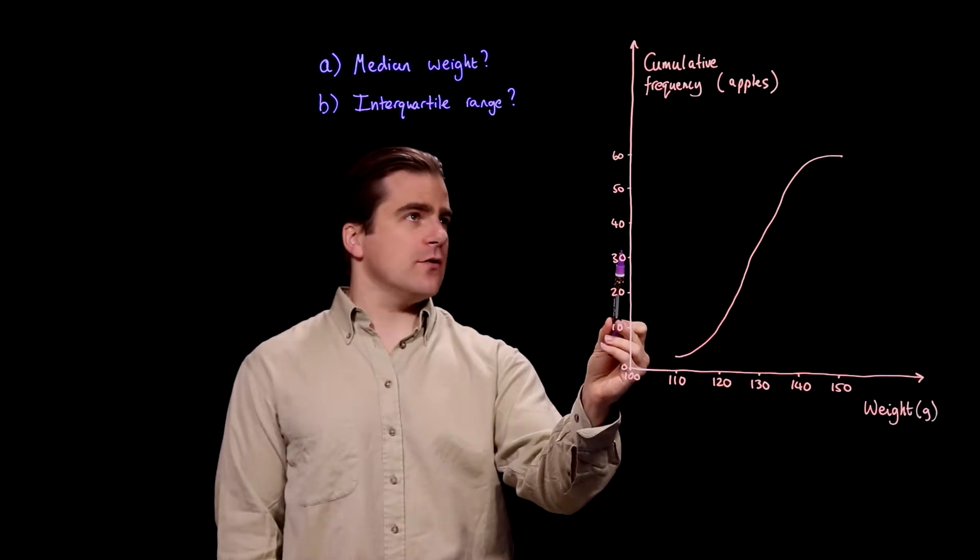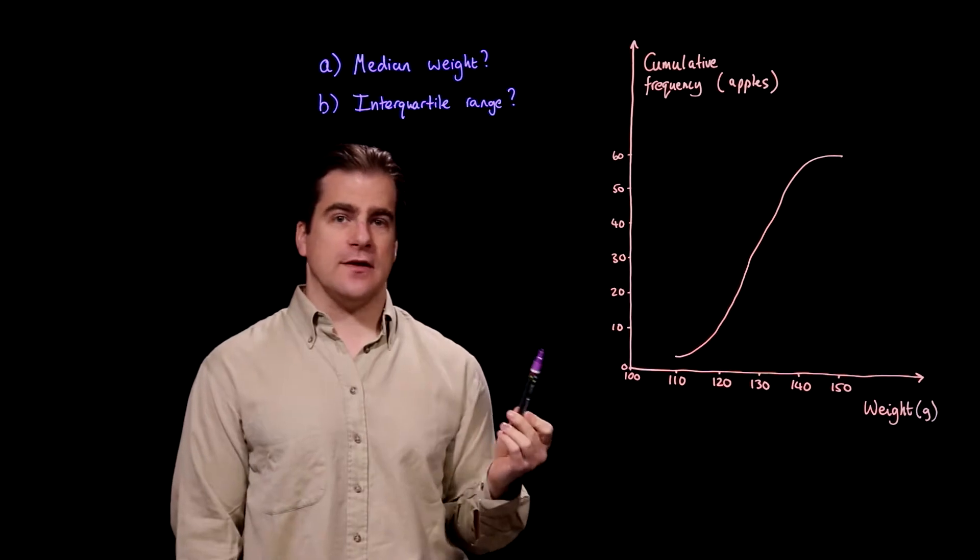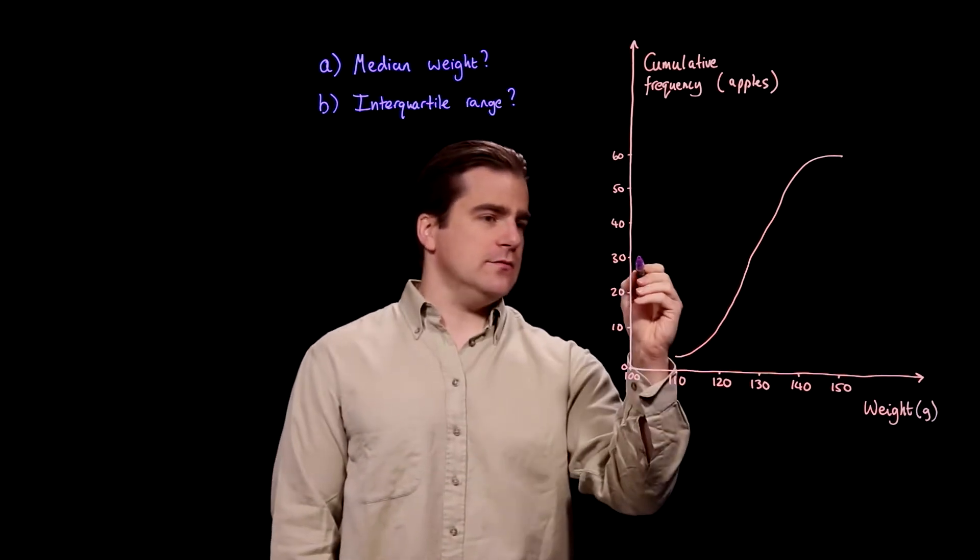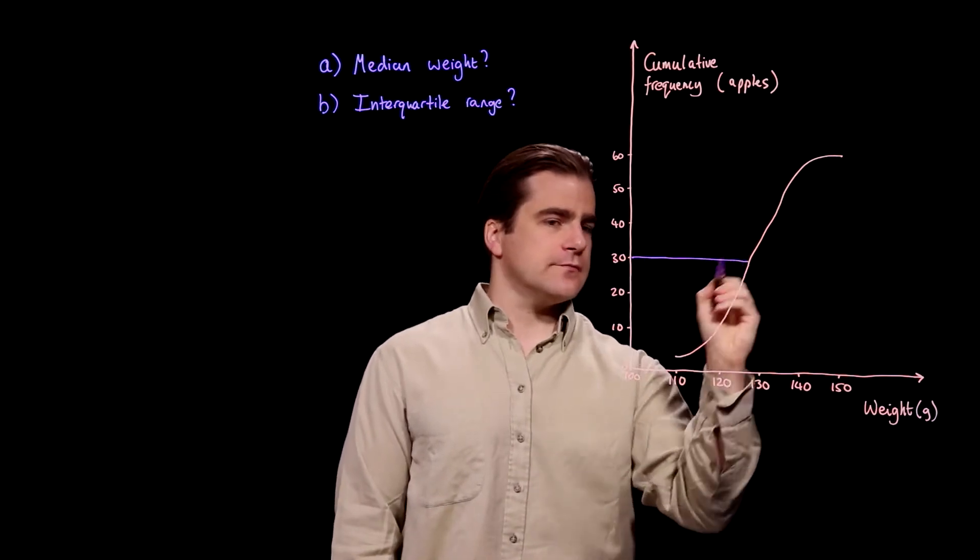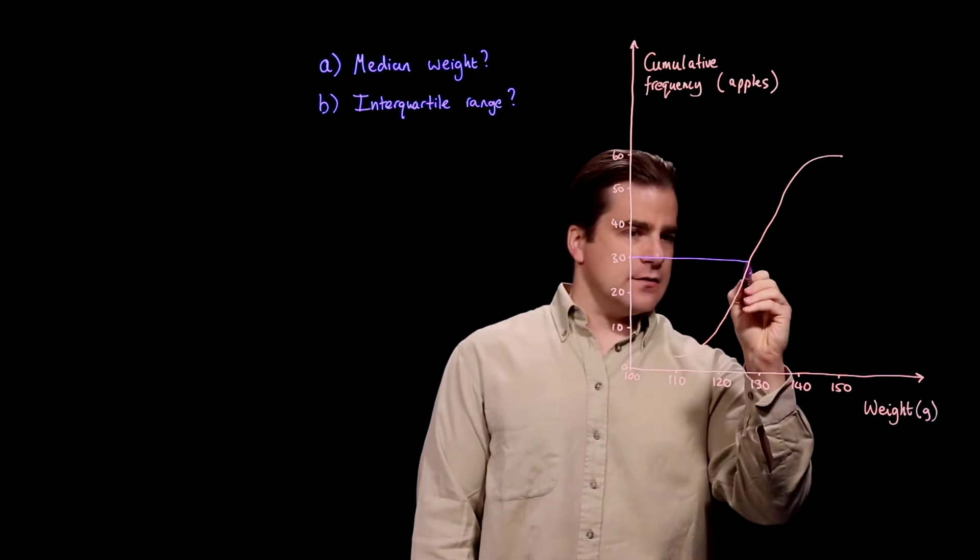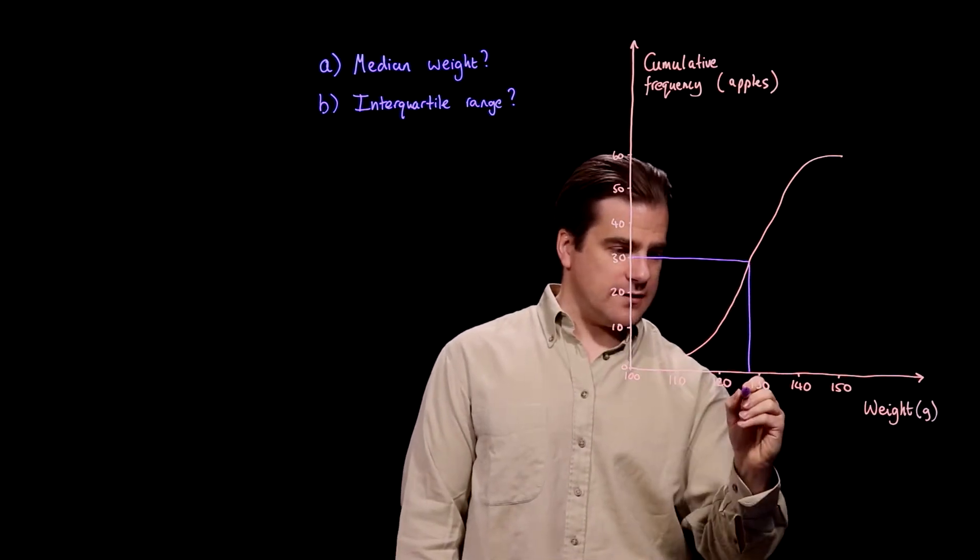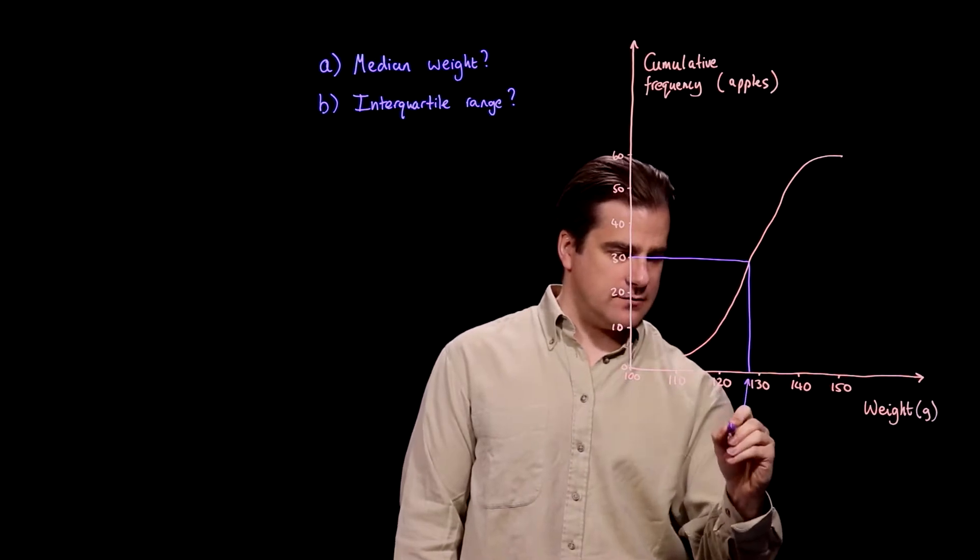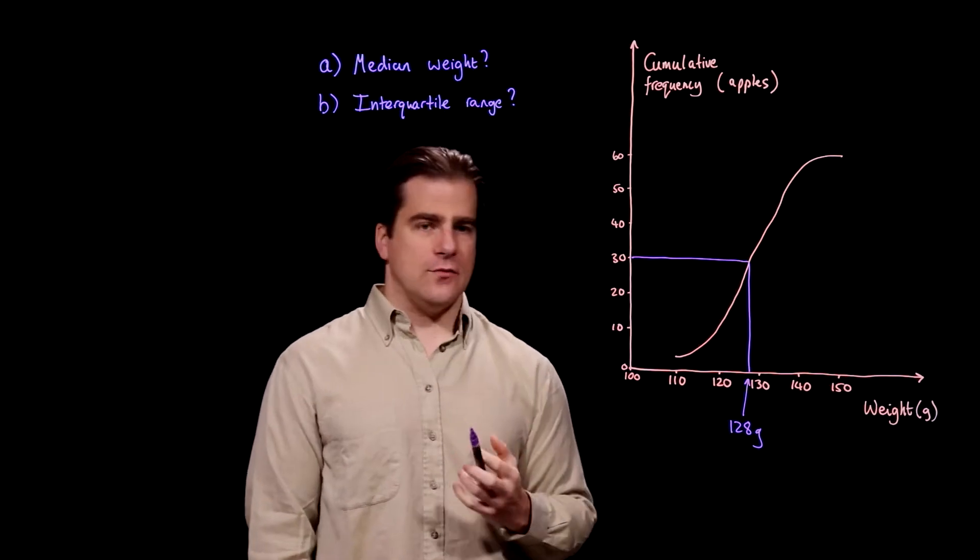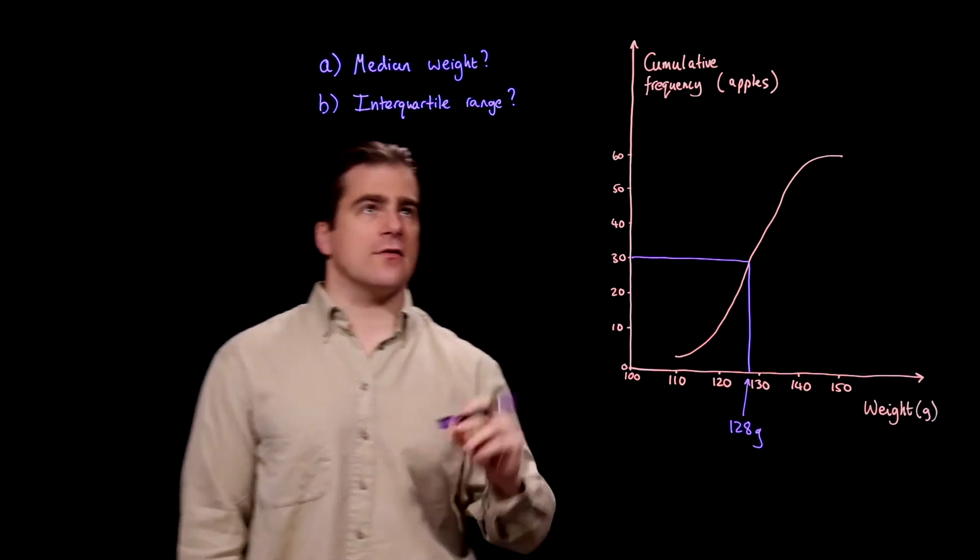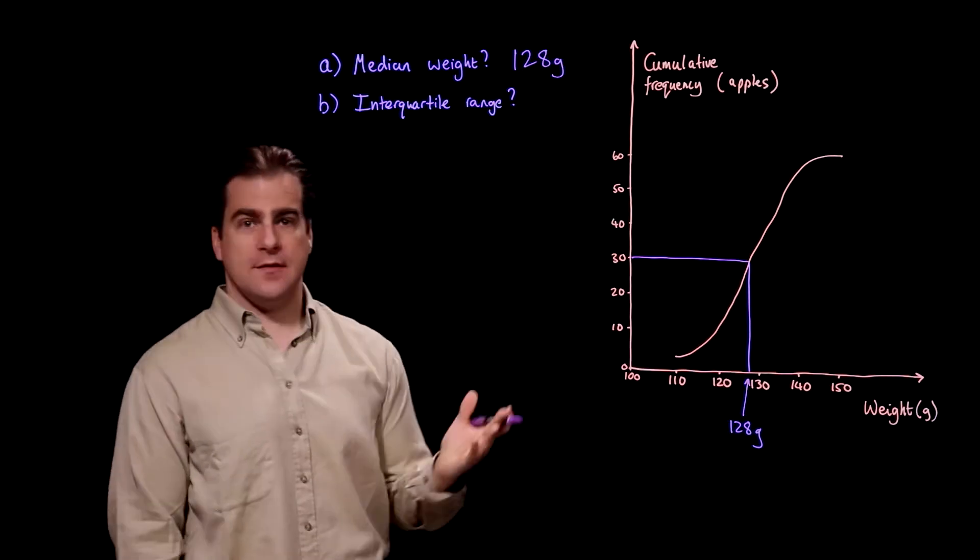And then you go across and down to find the weight and that will give you the median weight. So, across and down from 30 and we get 128, that value. Therefore, the median weight is 128 grams. Simple.